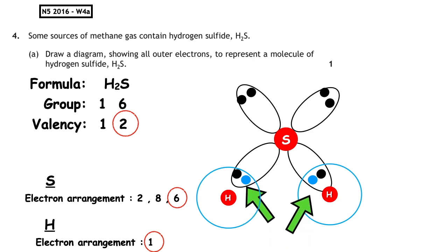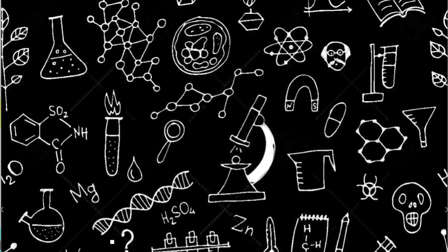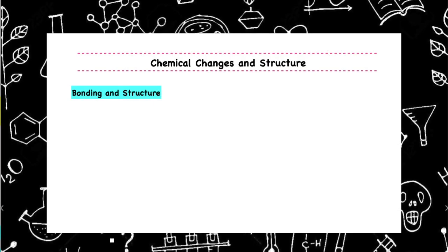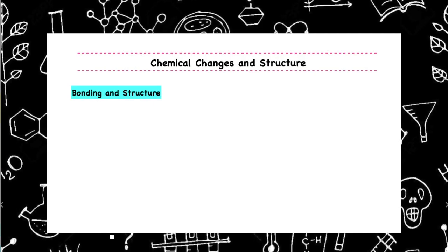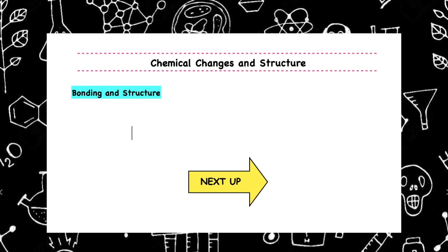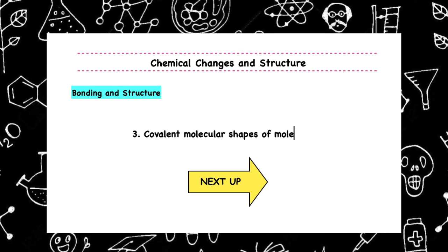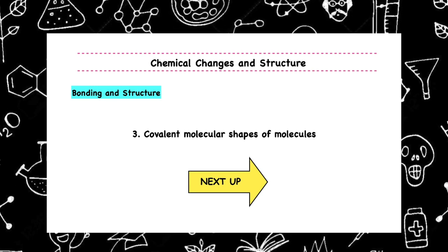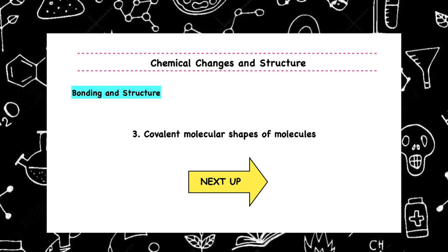Hydrogen sulfide has two covalent bonds, which we can see in the completed diagram.